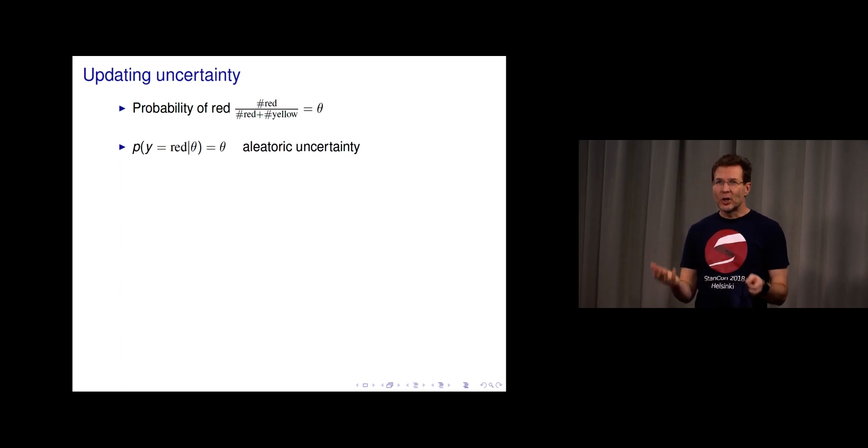We can use this mathematical notation P for the probability. The probability that Y is red, Y being the next color of the chip, and the bar denoting conditionally on theta, where theta is the probability we computed based on knowing the number of red and yellow ones. This tells us the aleatoric uncertainty.